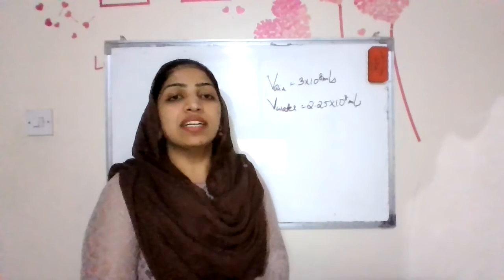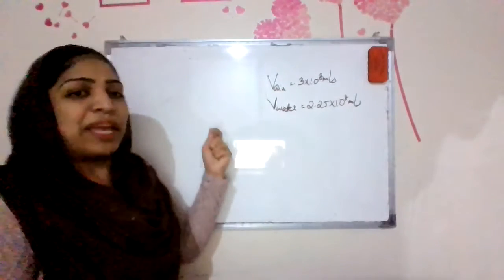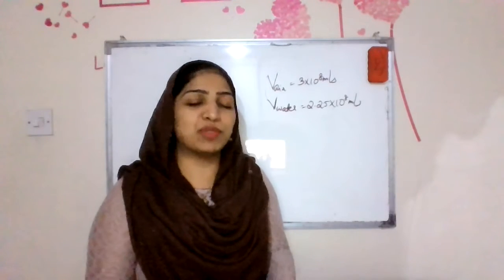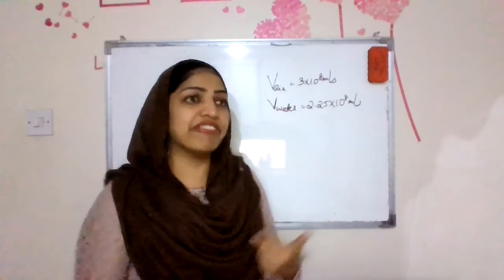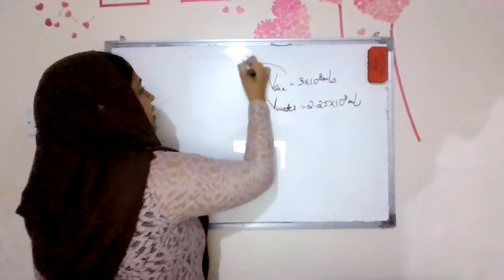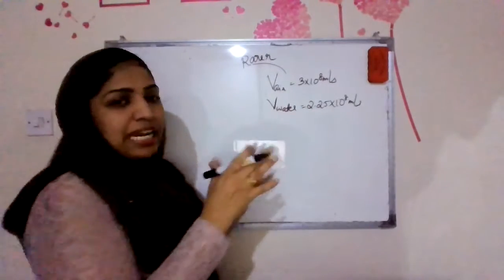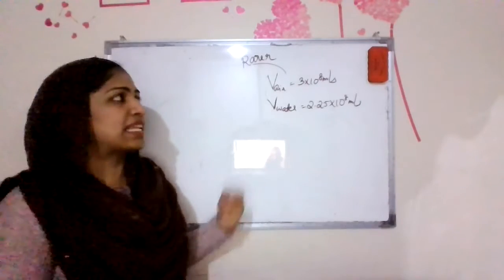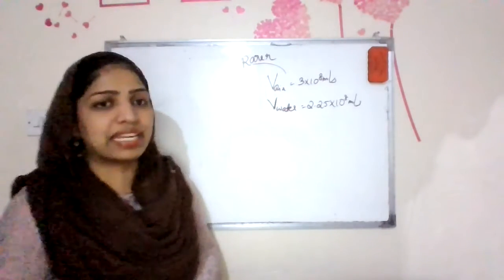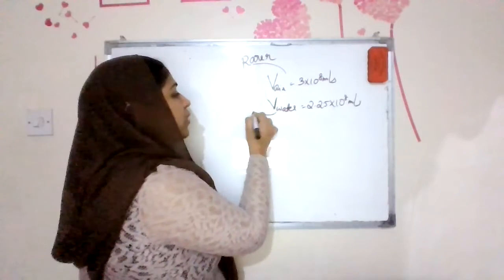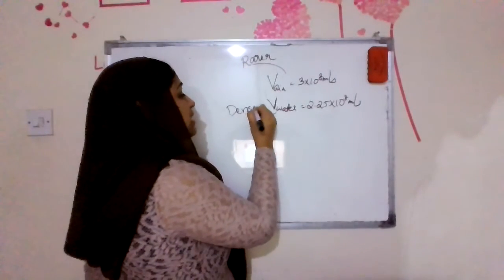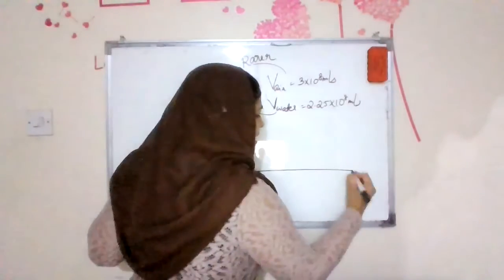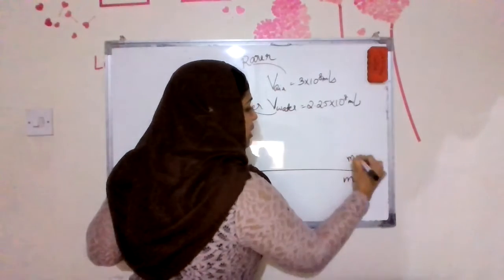It's the bending of light. The medium through which light travels faster is called the rarer medium. We have two mediums. The medium through which light travels slower is called the denser medium.